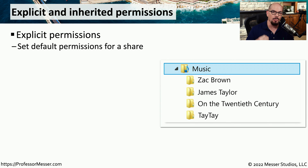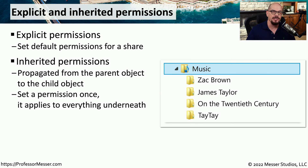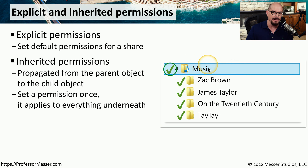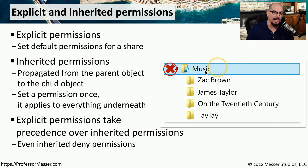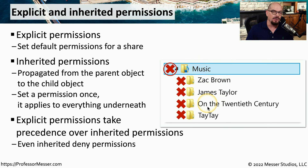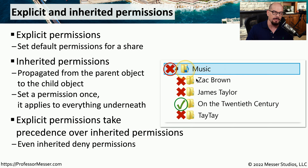Explicit permissions are permissions that we assign to objects that are in the file system. Inherited permissions are permissions that are automatically associated with that object and are based on the parent of that particular object. So if I was to assign permission to a music folder, any folders underneath that music folder would inherit the permissions of the parent. This also applies if I deny access to a folder — then all of the folders underneath will also have denied access because they inherited the permissions of the parent. But I can also pick any of these folders and assign an explicit permission, which overrides the inherited permission that was created from the parent.